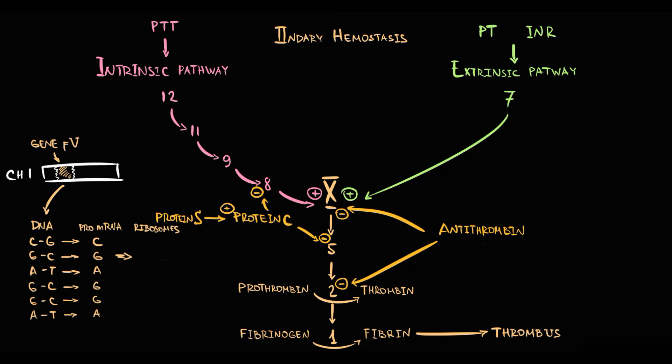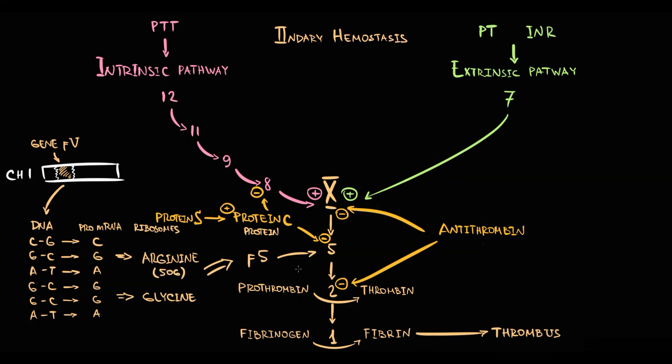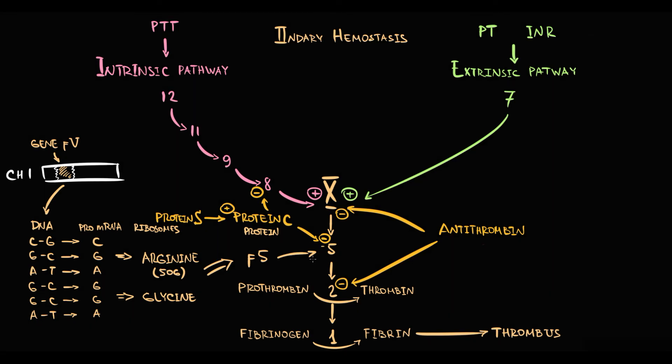Ribosomes read nucleotide sequence in matrix RNA molecule in codons and include complementary to that codon amino acid. It's arginine and glycine. And a particular amount of amino acids form protein. So in normal condition in position 506 arginine is located. And exactly this factor V protein with arginine in 506 position can be regulated by protein C. Protein C provides degradation of activated factor V by cleavage exactly in arginine position. And by this cleavage protein C inactivates factor V.